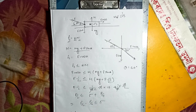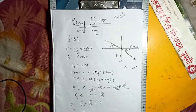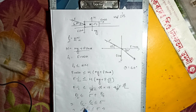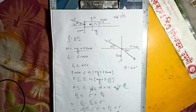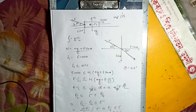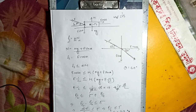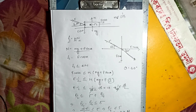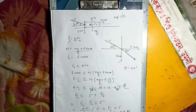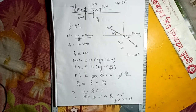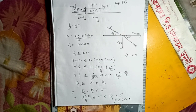F by 4 is less than or equal to 5, so F is less than or equal to 20. The maximum force is F equals 20 N. That is the maximum force.